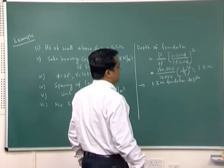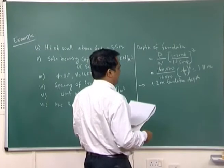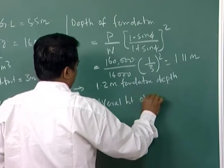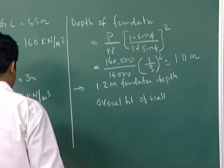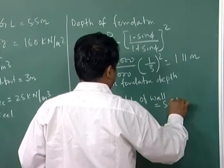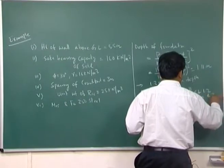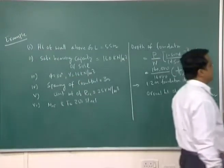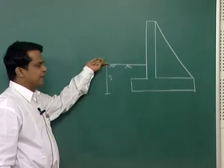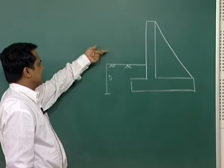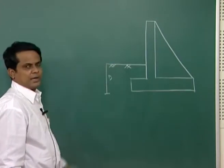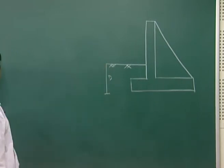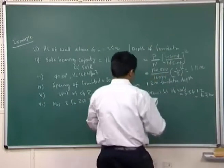With a foundation depth of 1.2 meters, the overall height of the wall is 5.5 + 1.2 = 6.7 meters. The retaining wall cannot stand above ground level; it must be embedded below. So the total wall height from bottom of foundation to top is 6.7 meters.